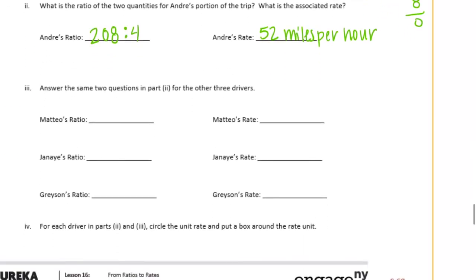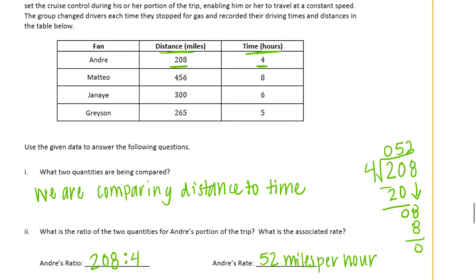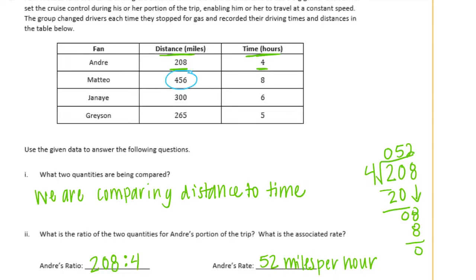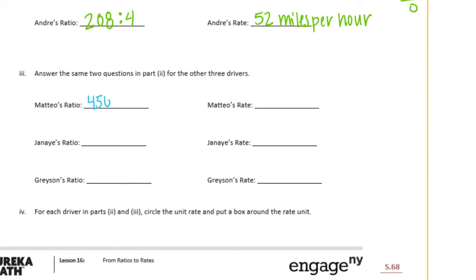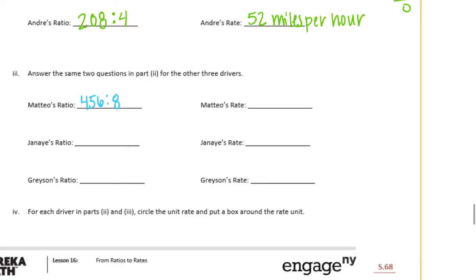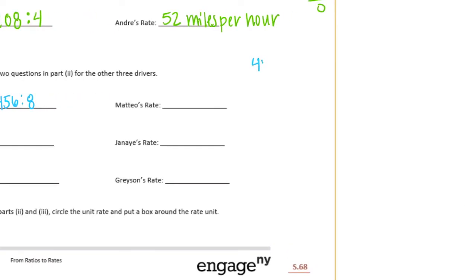Answer the same two questions in part 2 for the other three drivers. So Matteo's ratio. So he was going 456 miles in 8 hours. So we would have 456 to 8. And if we want to find out the rate, we just divide. 8 can't go into 4, but it goes into 45. Let's see. 8 times 5 is 40. 8 times 6 is 48. So that's too big. 8 goes into 56 seven times. So he was going 57 miles per hour.